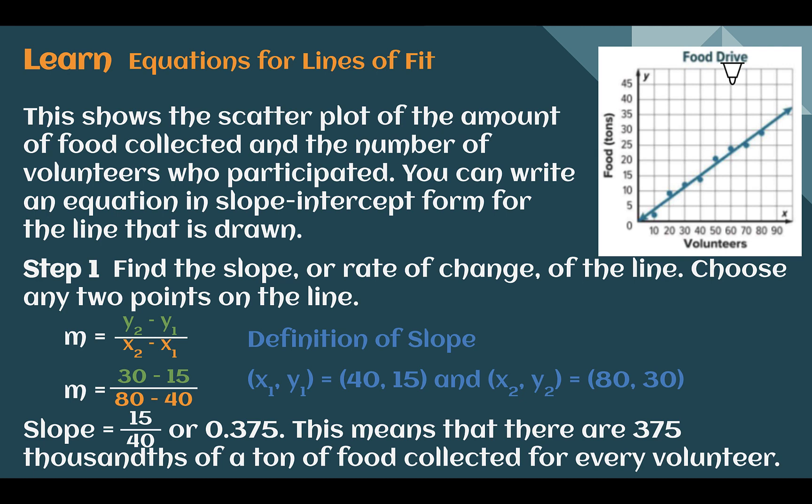Let's learn Equations for Lines of Fit. Here we have a scatter plot showing the amount of food collected and the number of volunteers who participated. We have already plotted our data points and created our line of best fit. Once our line is drawn, we can create an equation in slope-intercept form similar to how we did it back in module 4 using the slope and the y-intercept. And we're going to do that off of the line that we drew, not necessarily the data points that are there.